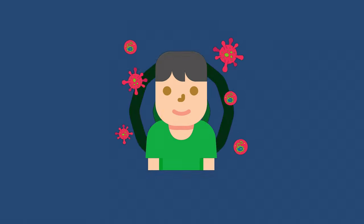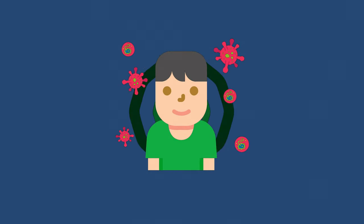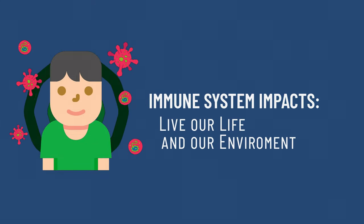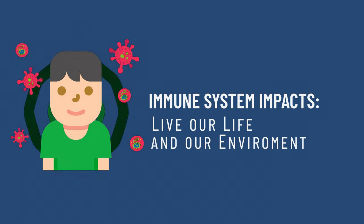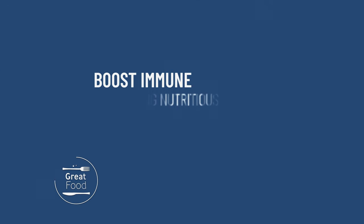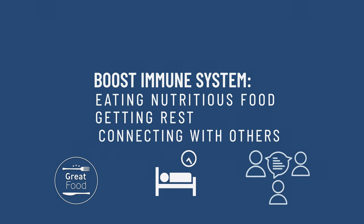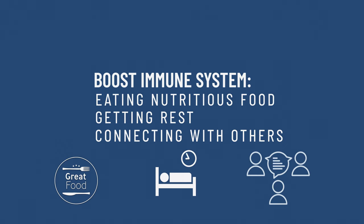Within our bodies, each of us has an immune system that protects us from illnesses. The strength of our immune system is impacted by how we live our life and our environment. For example, by eating nutritious food, getting rest, and connecting with others, we can boost our immune system and stay healthy and strong.